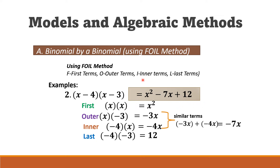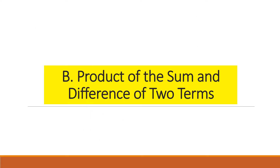Combining −3x and −4x gives −7x, so the final answer is x squared − 7x + 12. Now we continue with the product of the sum and difference of two terms.